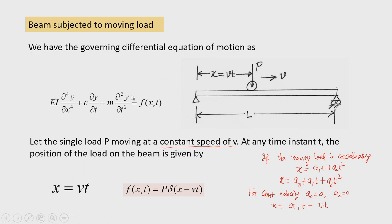In the differential equation of motion — EI ∂⁴y/∂x⁴ + c·∂y/∂t + m·∂²y/∂t² = f(x,t) — f(x,t) is the distributed load over the beam. There is a constant moving load passing from left to right, and the position of the load at any time instant is of interest. The position of the load at any time instant can be represented by the Dirac delta function.